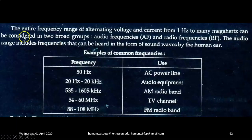Let's now discuss audio and radio frequencies. The entire frequency range of alternating voltage and current from 1 Hertz to many megahertz can be considered in two broad groups: Audio Frequencies (AF) and Radio Frequencies (RF). The audio range includes frequencies that can be heard in the form of sound waves by the human ear.